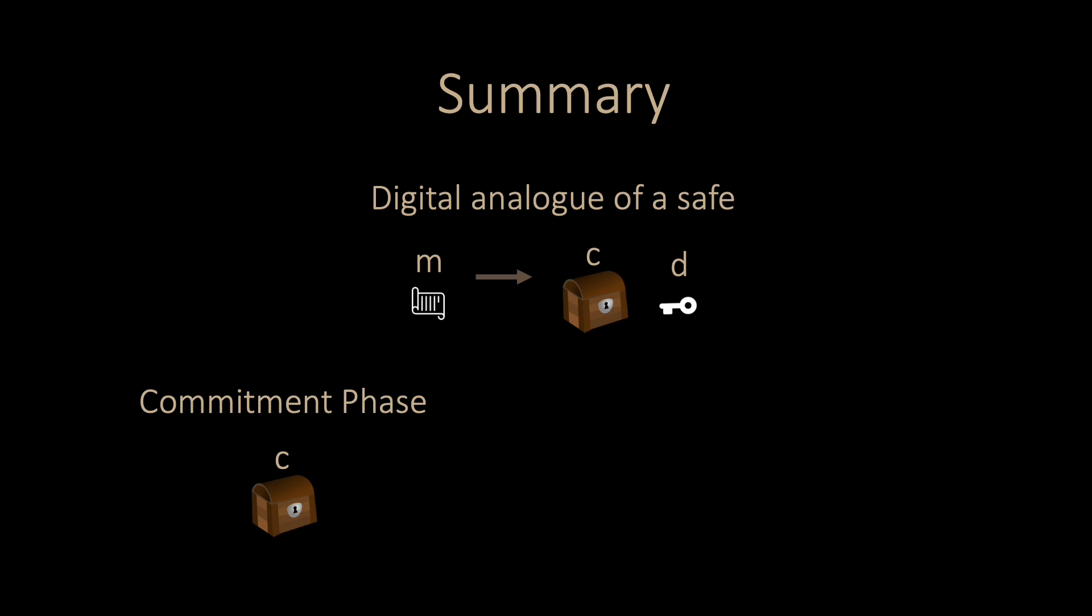In the first phase, the commitment phase, only the commitment c is made public. At a later stage, in the reveal phase, the original message and the secret key are made public. We have seen two examples of commitment schemes. The first example was based on hash functions, and the second example, Pedersen commitments, was based on the hardness of the discrete logarithm.